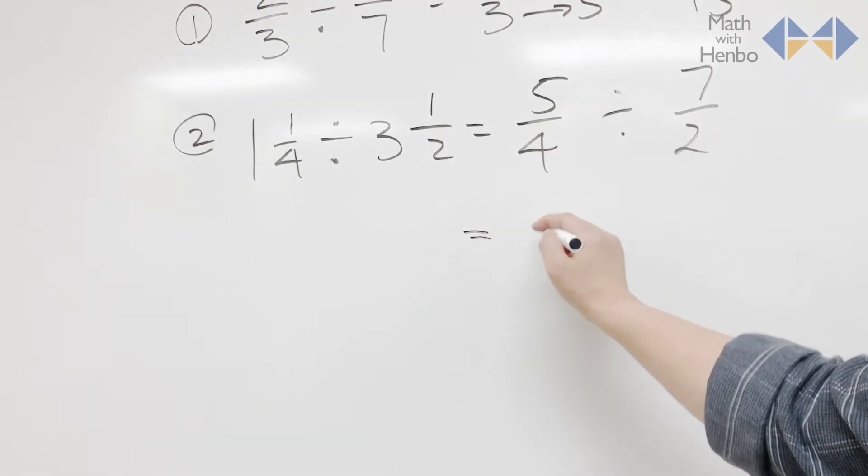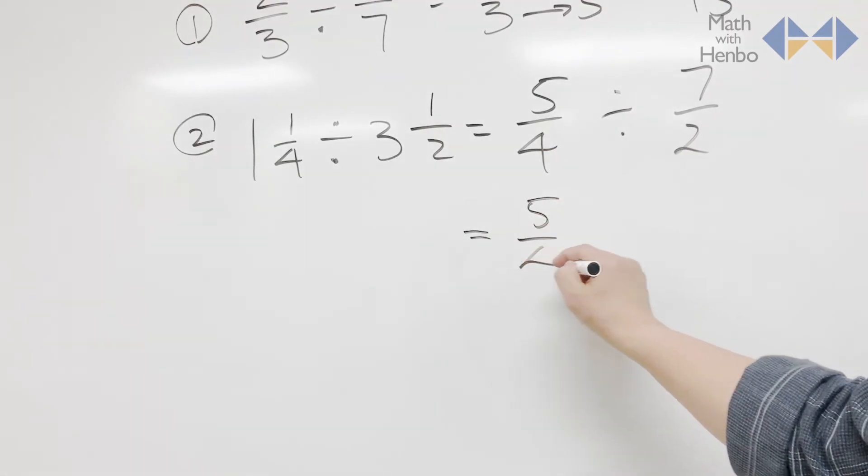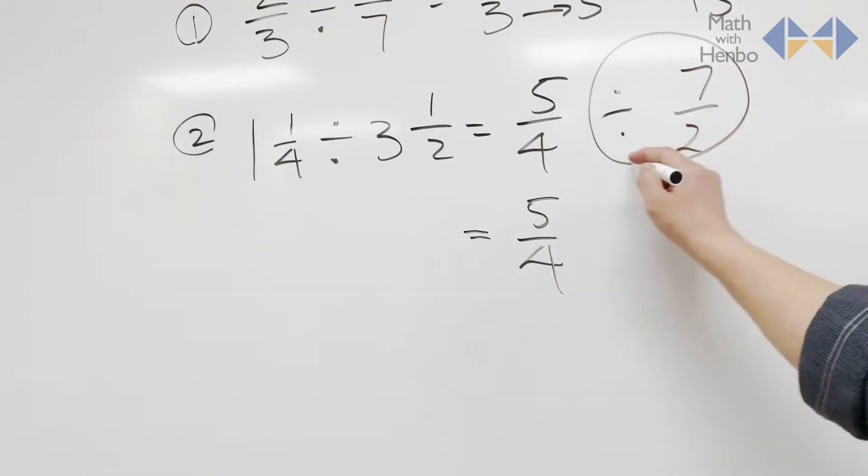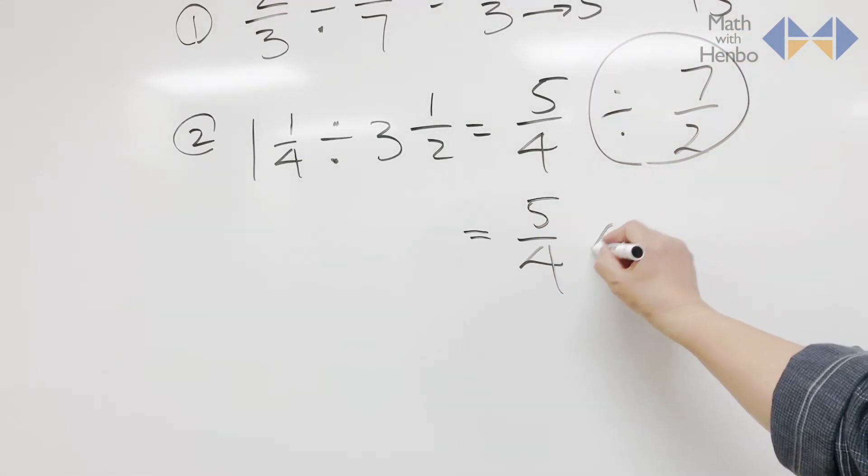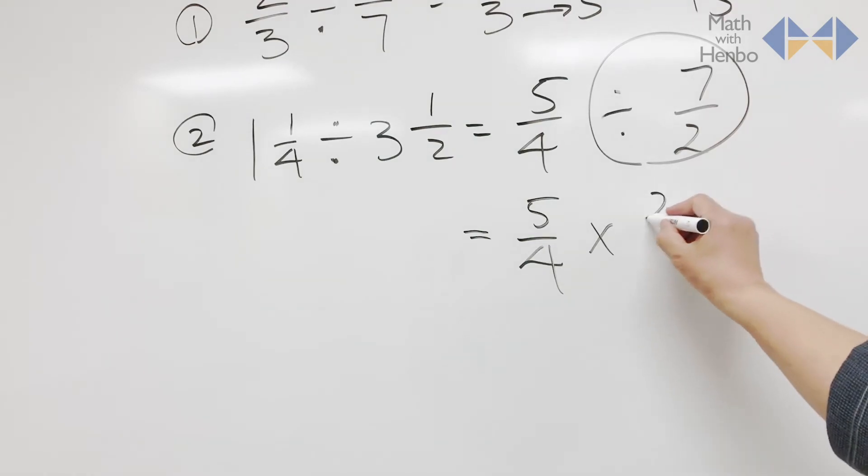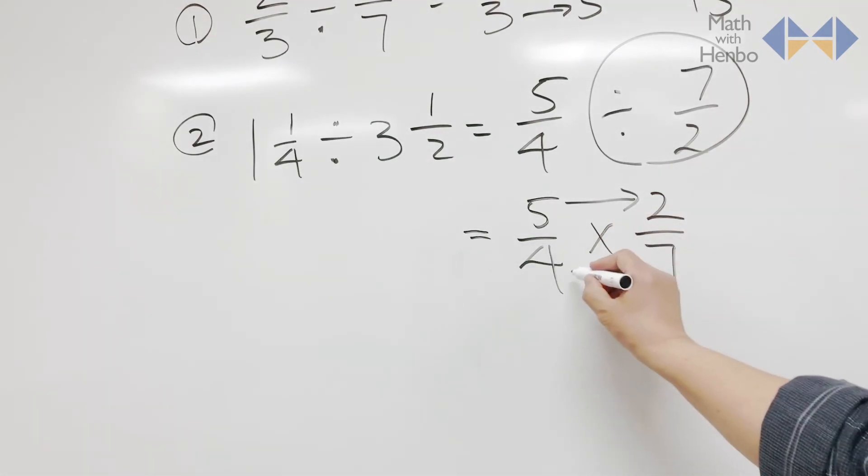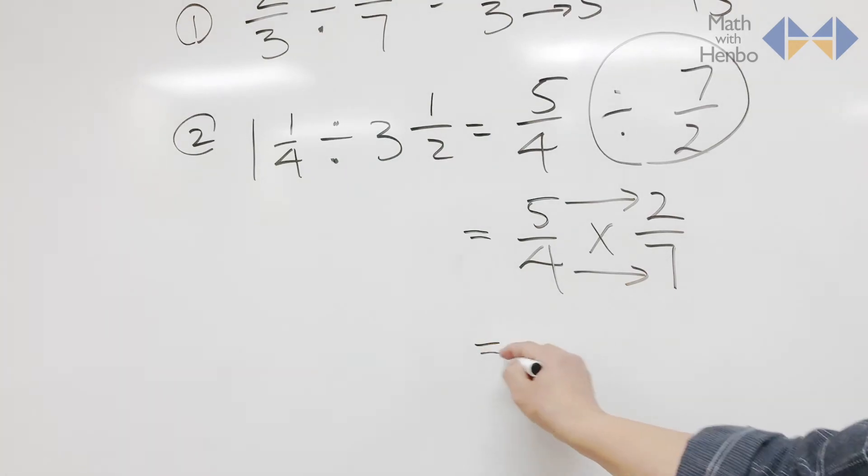Here, 5 over 4 stays as is on the left side. But the right side fraction gets changed. Division to multiplication, and 7 over 2 becomes 2 over 7. Then we multiply top to top, bottom to bottom numbers. That becomes 10 over 28.